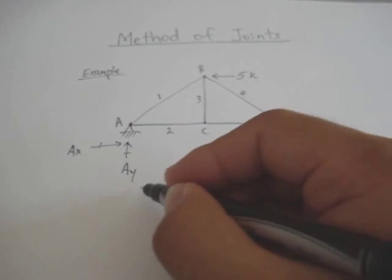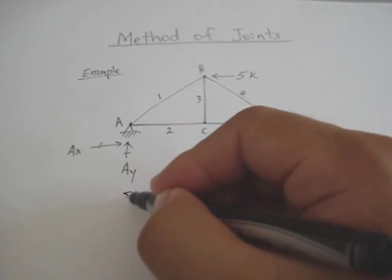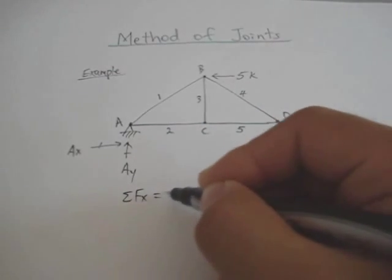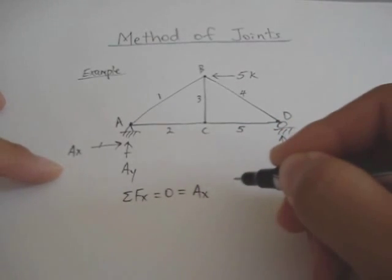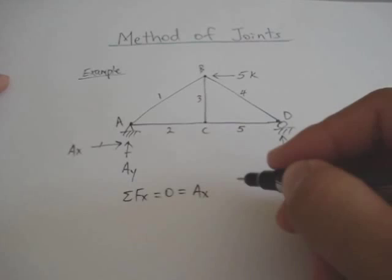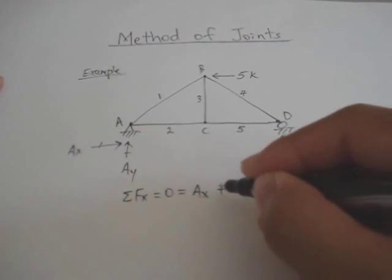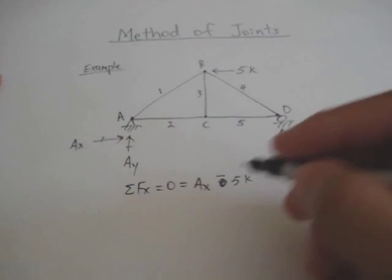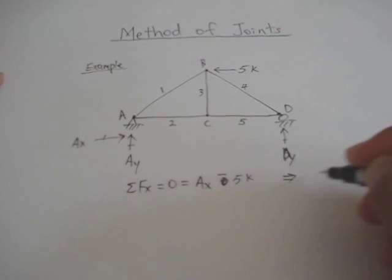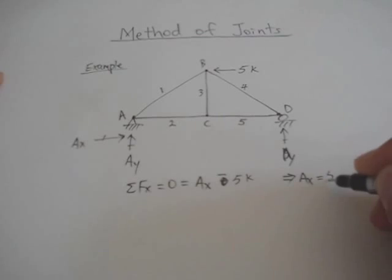So one easy way is to do sum of the forces in the x first. So that equals zero since it's static. Now you have the Ax in the x direction and you also have the 5 kip going in the minus x direction. So it should be minus 5 kips. Now to solve this equation you get Ax to be positive 5 kips.